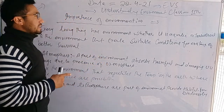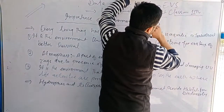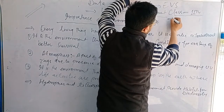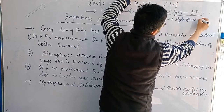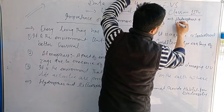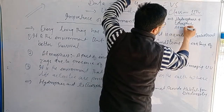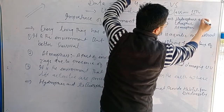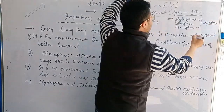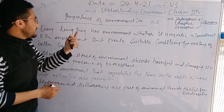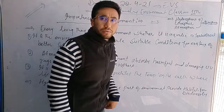The components of the environment include the hydrosphere, the atmosphere, and the biosphere. Each of these elements can also contribute to the environment itself, making it a vital system.